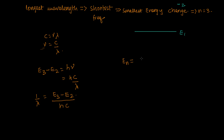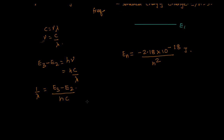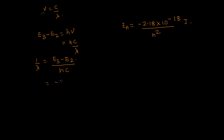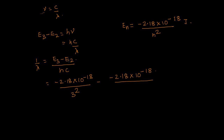Now what is E3? The general expression for En in joules is minus 2.18 times 10 to the power minus 18, divided by n squared. So E3 minus E2 equals minus 2.18×10⁻¹⁸ divided by 9, minus minus 2.18×10⁻¹⁸ divided by 4.